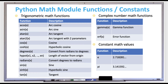Here are some more math module functions and a few constants. The table on the left shows trigonometric math functions: acos for arc cosine, asin for arc sine, atan for arc tangent, atan2 for arc tangent with two parameters, cos for cosine, cosh for hyperbolic cosine, degrees to convert radians to degrees, hypot for the length of a vector from the origin, radians to convert degrees to radians, sin for sine, sinh for hyperbolic sine, and tan for tangent. I don't know what a lot of these mean, but if you are a math major, I'm sure you know these better than I do. Just know that they're there if you ever need to use them.